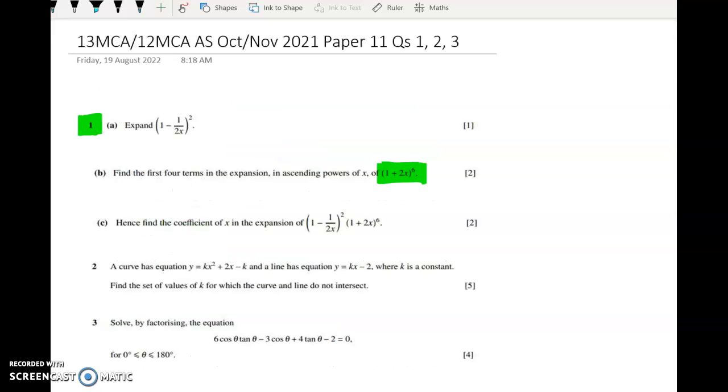The second question is one about a curve and a line and we've got to find the set of values for which the curve and the line don't intersect. So we're going to be equating these two things and then thinking about when we know that there won't be any solutions. And that turns into a quadratic equation and a quadratic equation has no solutions when the discriminant is negative.